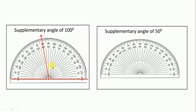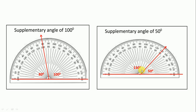So it is 100 and its supplementary is 80, total is 180. Next we draw 50 degrees — here is the 50 degree angle and its supplementary is 130 degrees. We write 50 here and 130 here; total is 180. The sum of two angles equal to 180 degrees means they are supplementary.